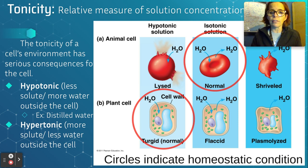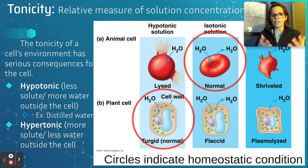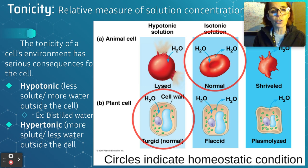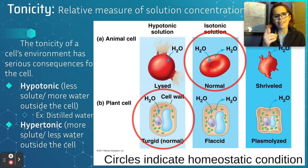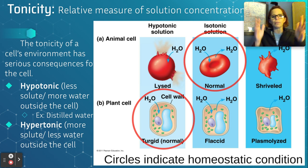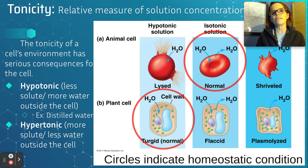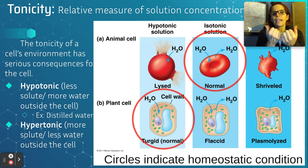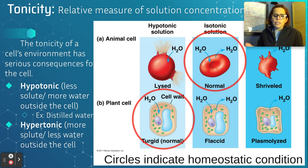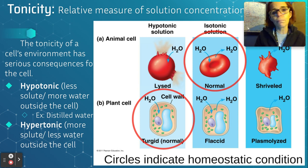The plant cell loves a hypotonic solution like distilled water — water rushes in, we've got high turgor pressure, and we say that it is turgid. In an isotonic solution, even though it's great for animal cells, it's not necessarily the best for green plants — they get a little wobbly. What's terrible for plants is a hypertonic solution: the water is leaving the cell, the central vacuole is shrinking, it's no longer putting pressure, and it's like the plant's skeleton collapsing. The plant wilts, and that's called plasmolysis.